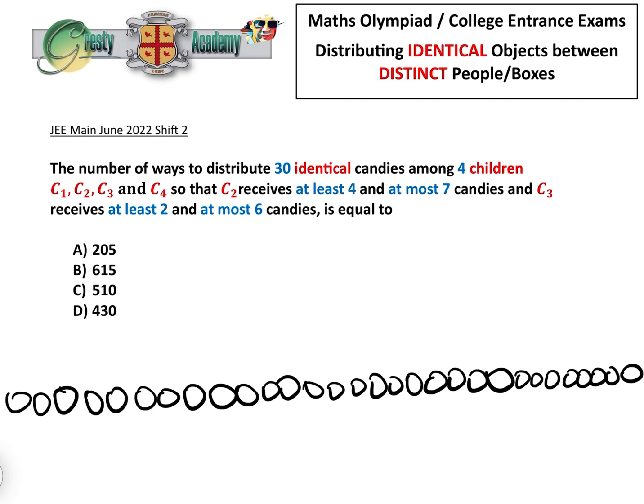So anyway, basically the number of ways to distribute 30 identical candies among four children. Children are always deemed to be distinct and they call them C1, C2, C3 and C4. They tell us that C2 receives at least 4 and at most 7, and C3 receives at least 2 and at most 6. They give us four options for what the answer is.